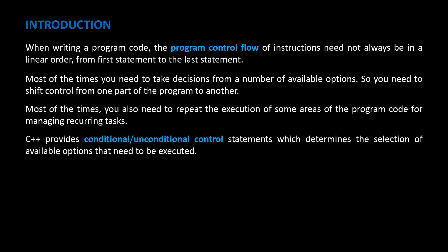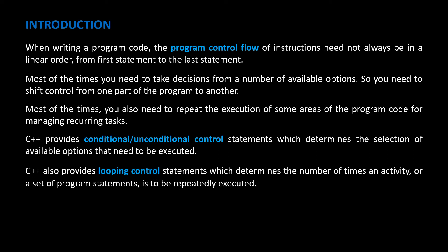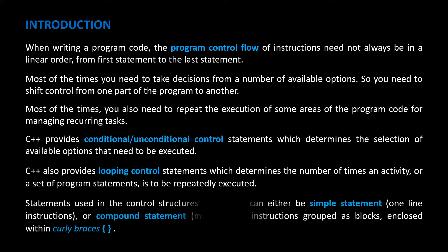C++ provides conditional and unconditional control statements, which determine the selection of available options that need to be executed. C++ also provides looping control statements, which determine the number of times an activity, or a set of program statements, is to be repeatedly executed. Statements used in control structures and loops can either be a simple statement — that is, one-line instructions — or a compound statement, that is, multiple-line instructions grouped as blocks, enclosed within curly braces.